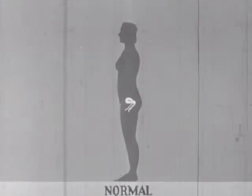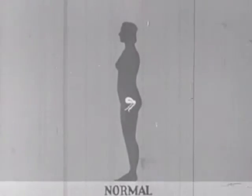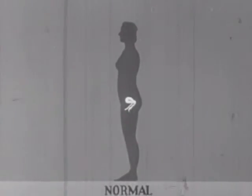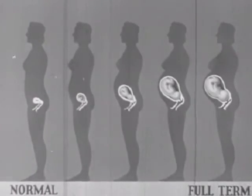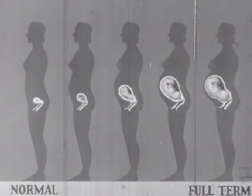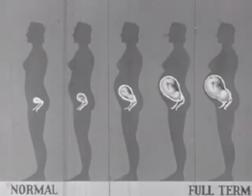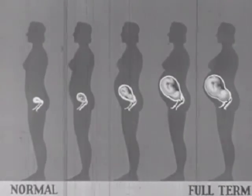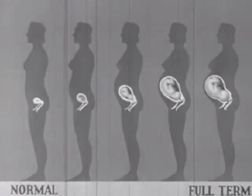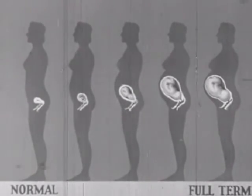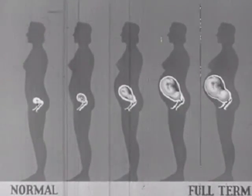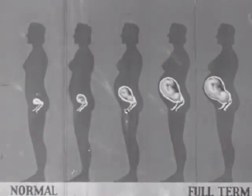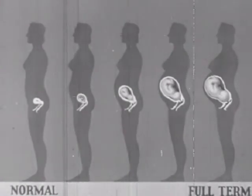Here we see first the normal female figure showing the uterus and vagina. As pregnancy continues, the uterus becomes more distended with corresponding changes in body contour. The stomach, intestines, liver, and other organs are pushed out of normal position and posture is changed. You can also see the enlargement of the breasts in preparation for feeding the infant. Yet as marked as these physical changes appear, they are only temporary — shortly after childbirth, most of them will disappear.